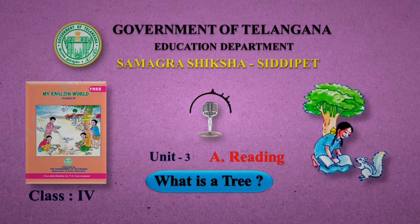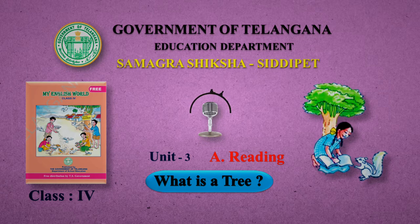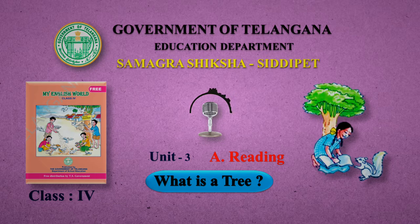After walking a few steps, Amu and Bittu see children playing under trees. Bittu: Amu! Look! Your friends are playing there. All her friends come running. Amu smiles at them. Amu: What is a tree? Friends: It is a place for us to play.